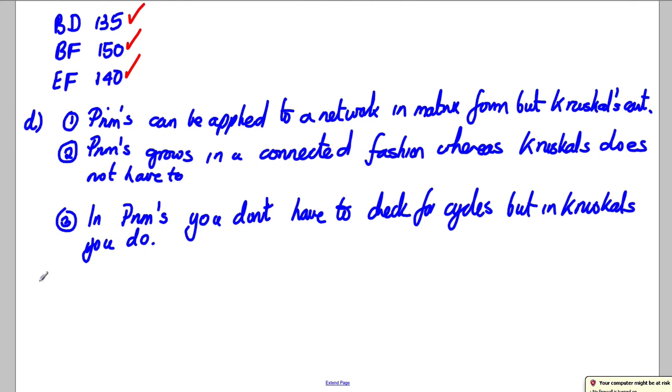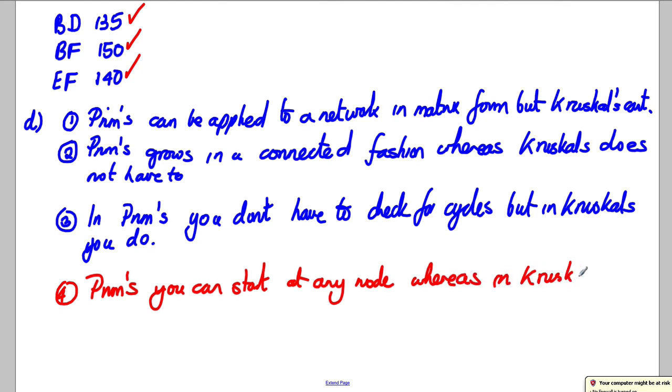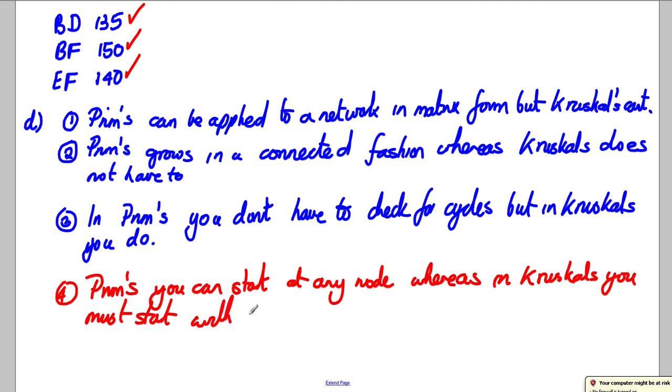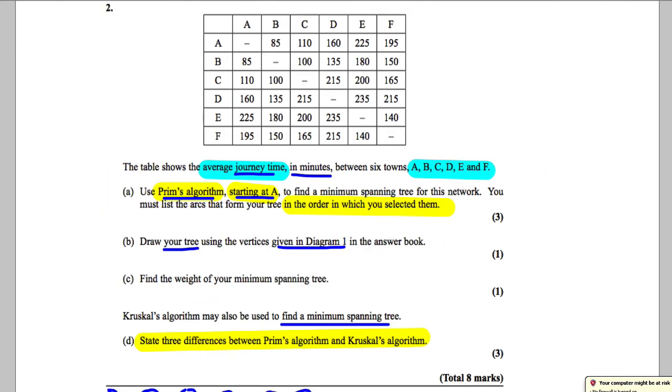Now another one, I'll just write a couple more just in case you want to remember a couple more. In Kruskal's you always start with the shortest arc whereas in Prims you can start anywhere. So I would write in Prims you can start at any node whereas in Kruskal's you must start with the shortest arc. And I think that's about it. Between those four, you learn those four now and if they ever come up again you'll always be covered. So there we go. That's our eight marks on this question.